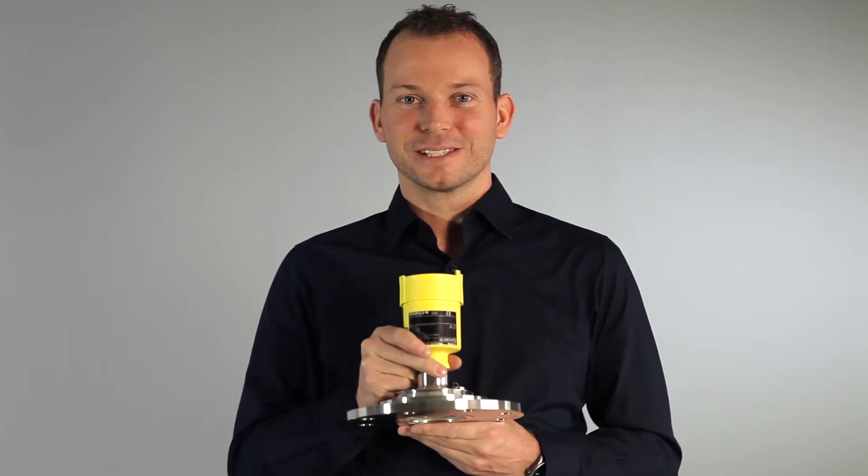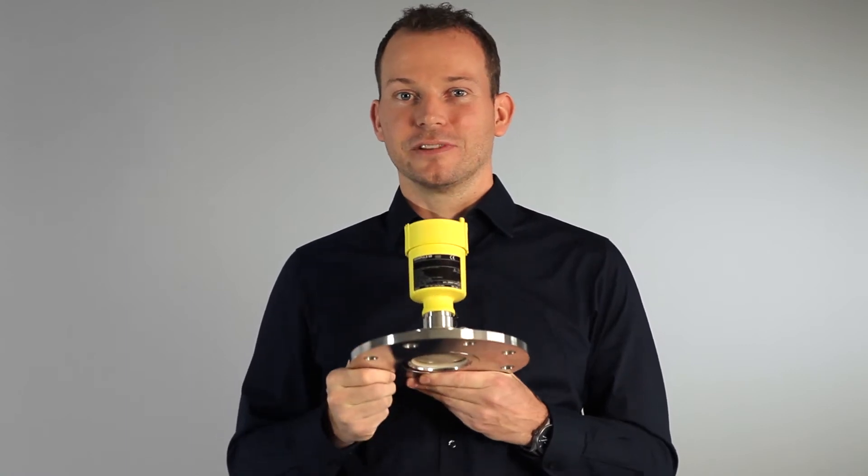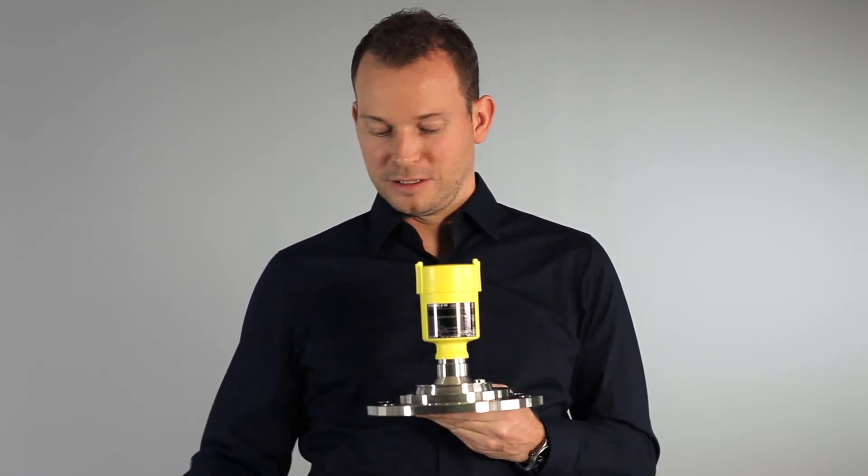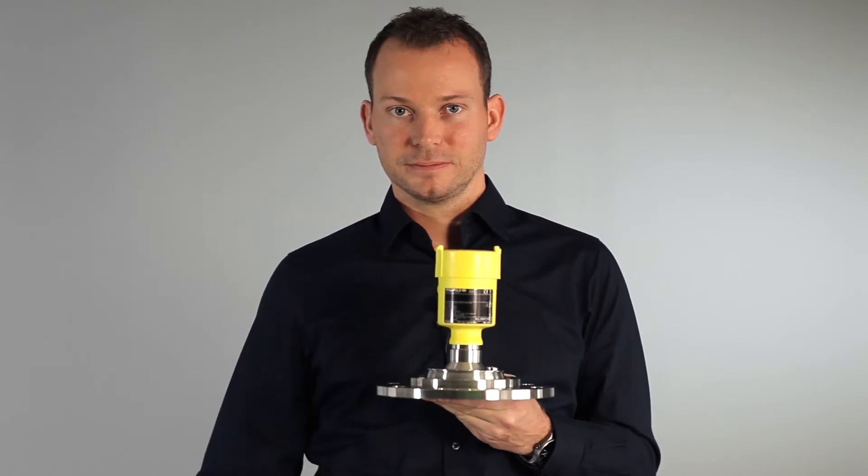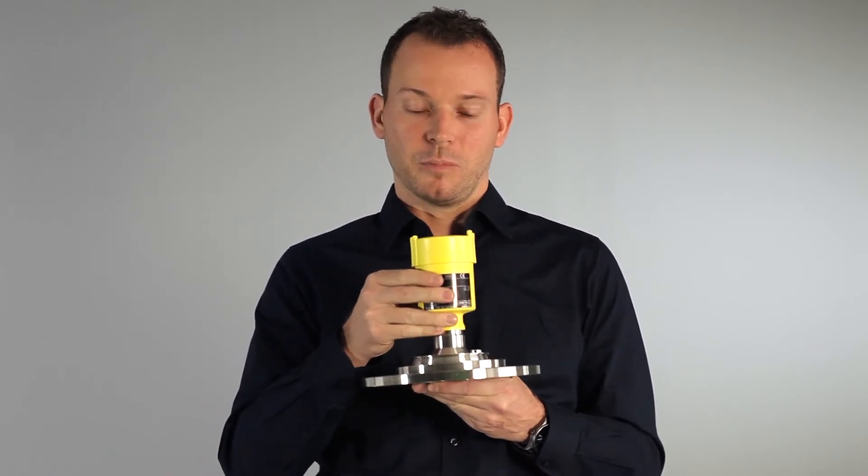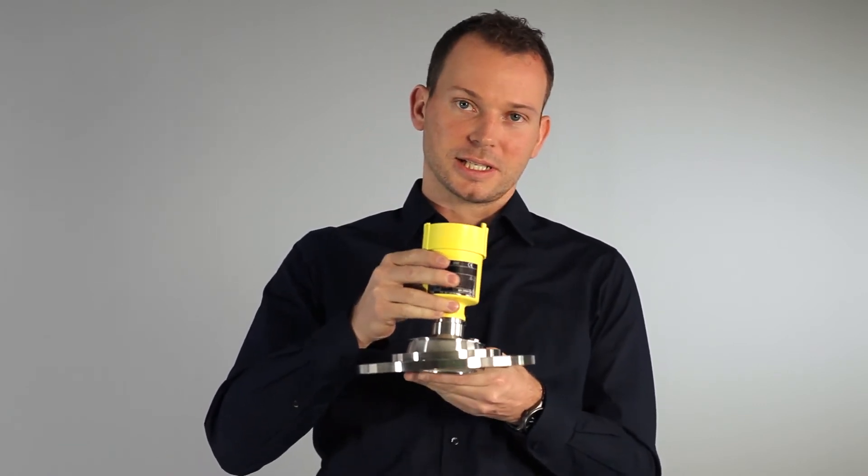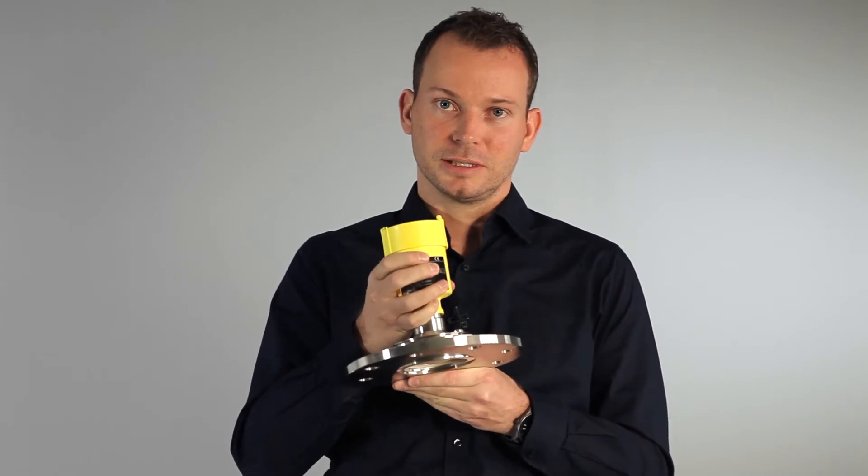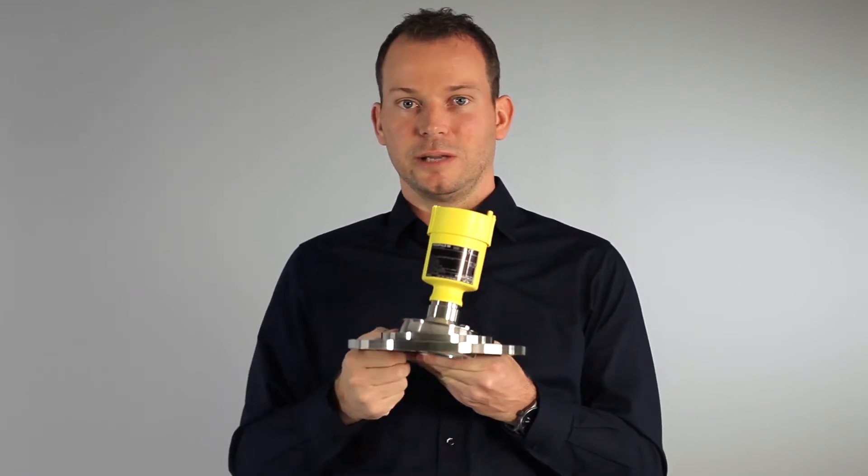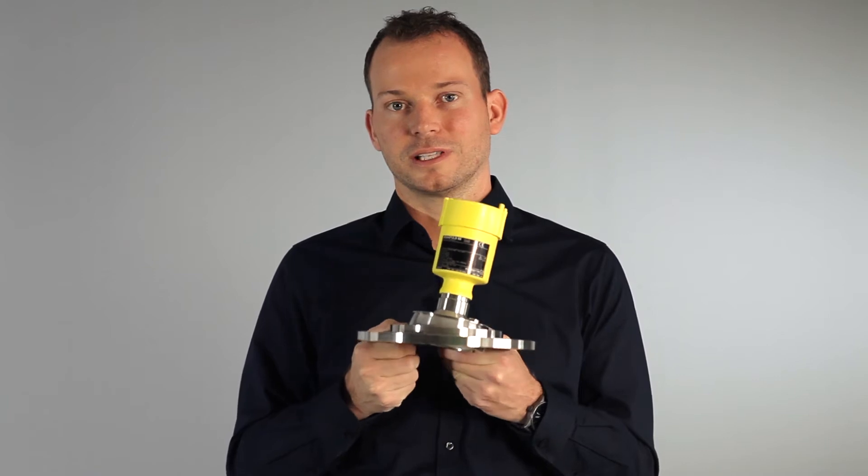For this reason, the Vega Pulse 69 has a swiveling flange. With six screws you can unlock the sensor and the whole antenna is in a ball so you can turn the sensor in all directions. So it's very easy to aim the sensor perfect for your silo.